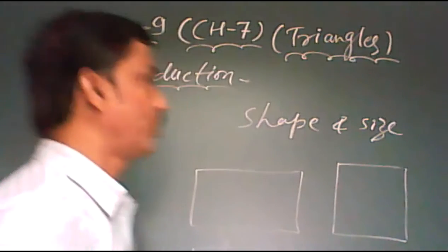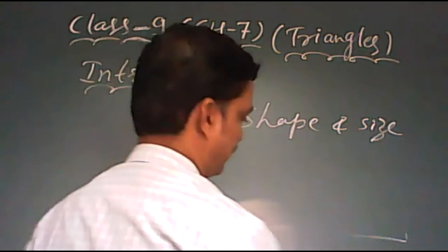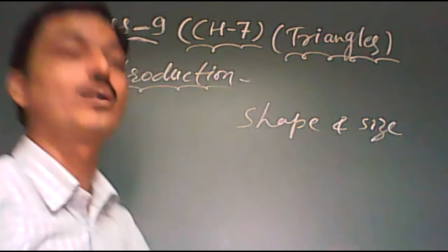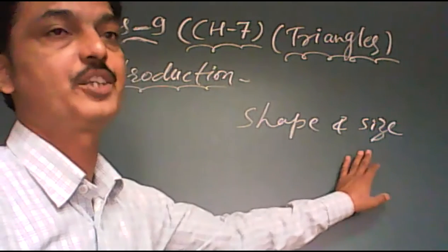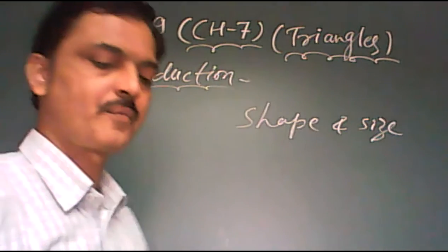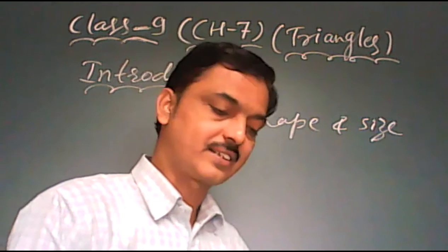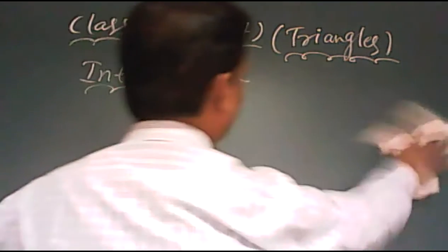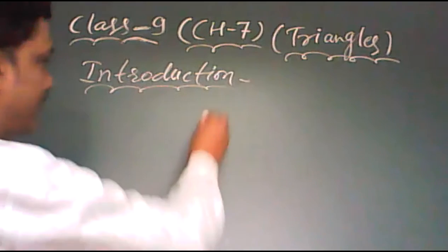So for any two objects, if they are congruent, it means they are equal in shape and size, both. And here we discuss about the congruence of triangle. In this chapter, we will discuss about the congruence of triangle.